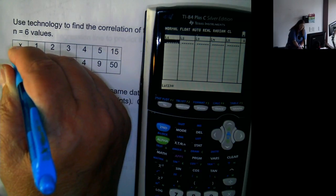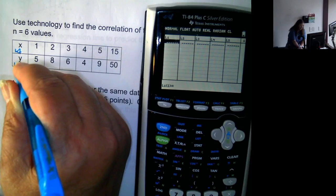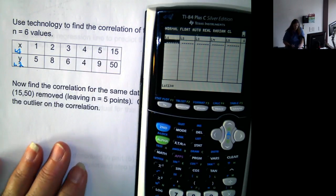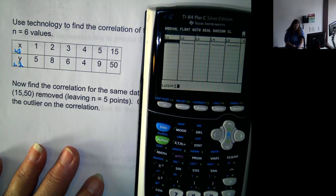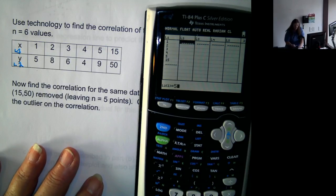Now, the x values will be entered into L1. The y values will be entered into L2. So we have 1, 2, 3, 4, 5, 15. Then 5, 8, 6, 4, 9, and 50.